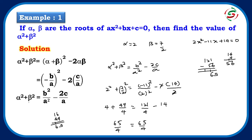So alpha² + beta² = b²/a² - 2c/a. These results are going to help you a great deal, so please go through these concepts, understand them, and apply them to different types of problems to verify the results and build confidence. We shall meet in the next session and see more examples of this concept. Till then, watch the videos, like them, share them, and understand the concepts. Thank you.